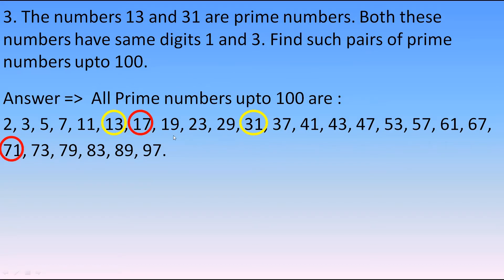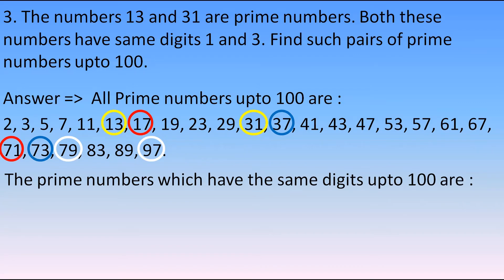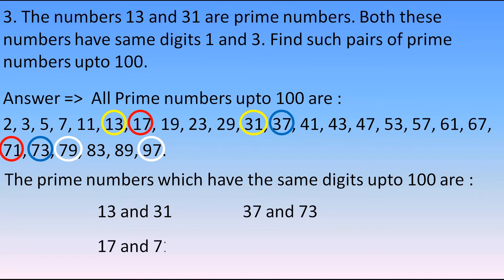Continuing: 19 — no 91. 23 — no 32. 29 — no 92. 37 — we have 73, so 37 and 73 form a pair. 41 — no 14. 43 — no 34. 47 — no 74. 53 — no 35. 61 — no 16. 67 — no 76. 79 — we have 97, so 79 and 97 form a pair. 83 — no 38. 89 — no 98. So the pairs with same digits are: 13 and 31, 17 and 71, 37 and 73, and 79 and 97.